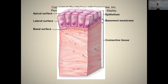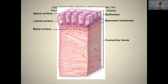In a simple columnar epithelium, you have an apical surface lining some space, a lateral surface, and a basal surface facing the basement membrane and the connective tissue underneath — that's the blood side. Below the basal surface you have the basement membrane, and below that, connected tissue.